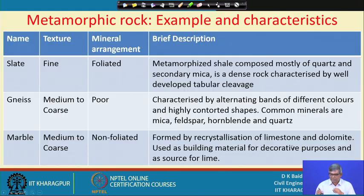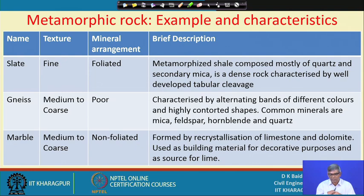Slate — its texture is fine and mineral arrangement is foliated. Its brief description is that it is metamorphosed shale composed mostly of quartz and secondary mica, and it is a dense rock characterized by well-developed tabular cleavage. You can see those cleavage planes if you look at the cell structure. Gneiss — its structure is medium to coarse and mineral arrangement is very poor, characterized by alternating bands of different colors and highly contorted shapes.